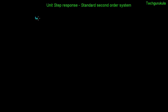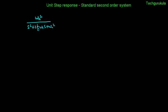In this video we are going to see the unit step response of a standard second order system. The transfer function of a standard second order system is given by omega_n squared over s squared plus 2 zeta omega_n s plus omega_n squared. It is a second order system because the highest degree of s, either in numerator or denominator, is 2.